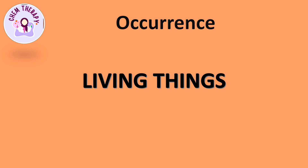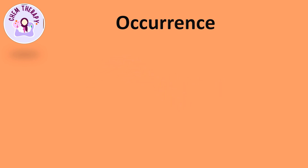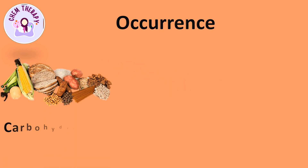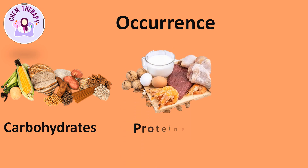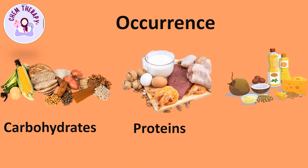The word organic means anything derived from living organisms. So, organic compounds occur mostly in living things, especially plants and animals. Examples of some organic compounds found in living things are carbohydrates, proteins, and fats.